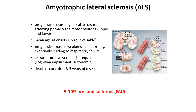Amyotrophic lateral sclerosis is a progressive neurodegenerative disorder that affects primarily the motor neurons — the upper motor neuron in the motor cortex and the lower motor neurons in the spinal cord. The mean age at onset is 60 years, but is also highly variable. The disease causes progressive muscle weakness and atrophy that can lead to respiratory failure. Extramotor involvement is frequent — cognitive impairment and anatomical disturbances can be present, occurring after three to five years of disease. Also in this pathology, 5 to 10% are familial forms.